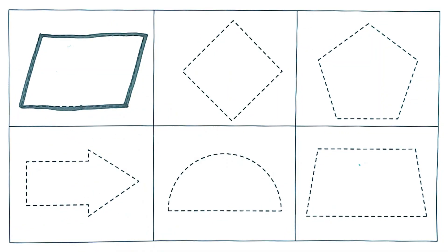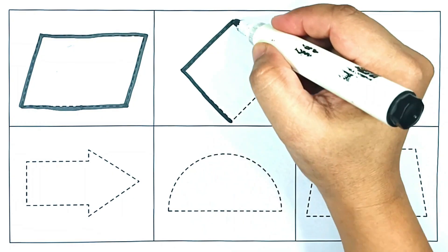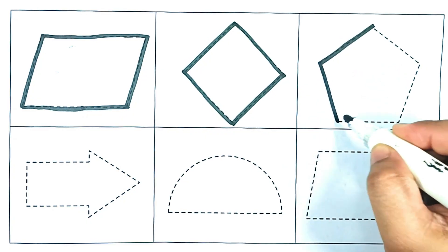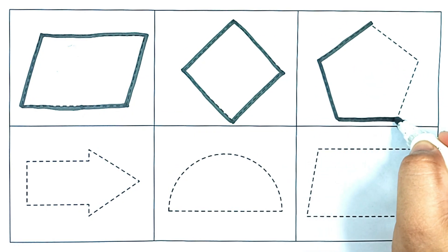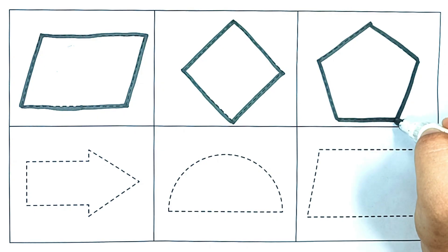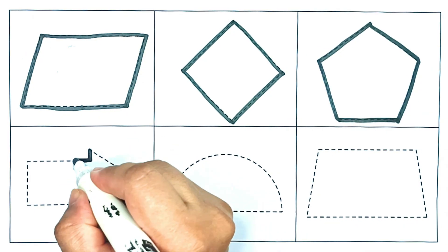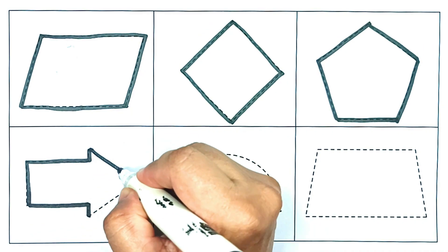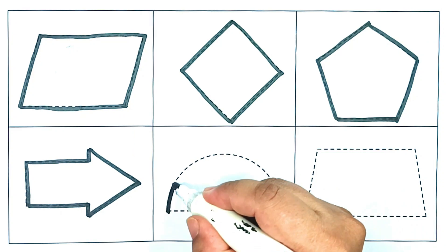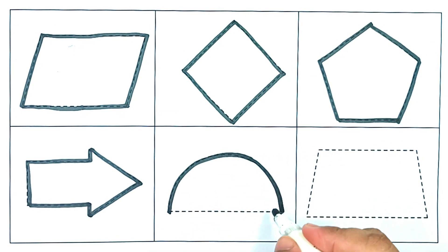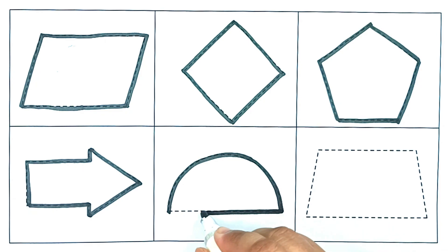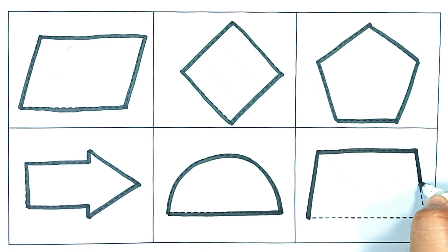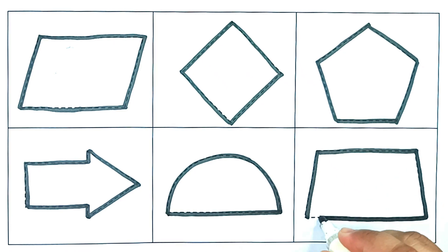Parallelogram. Rhombus. Pentagon. Arrow. Semicircle. Trapezoid.